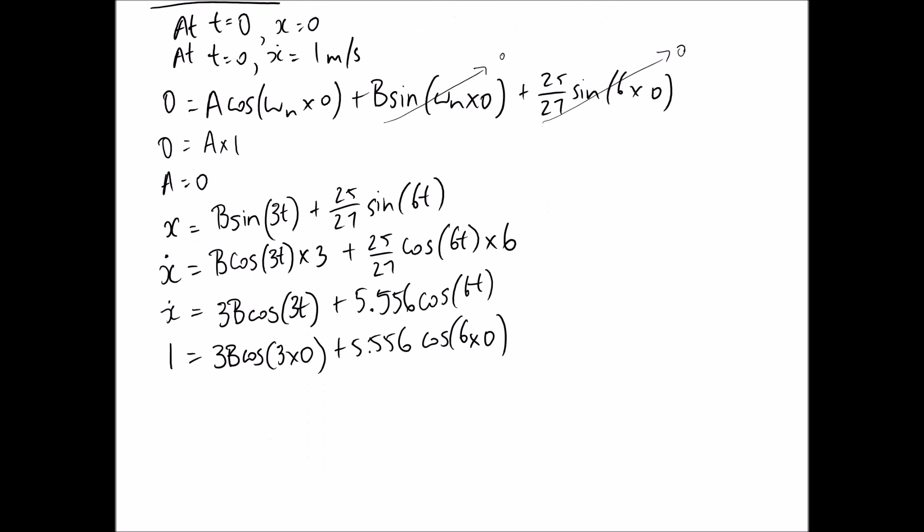Now we can use our initial condition in order to work out that extra constant b. Putting this in, we end up with this being simplified a little bit. We're going to get 1 is equal to cos of 0 is 1, so it's just going to be 3b. And again, cos of 0 is 1 here as well, so 5.556. Solving for b, our constant, b is negative 1.519. So now we can go and substitute it back into our equation for x as a function of time, this one here. And we end up with x equals negative 1.519 sine 3t, plus 25 on 27, sine of 6t. x is in meters, and t is in time.